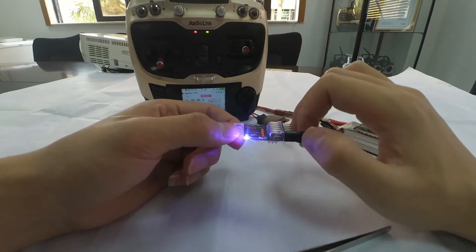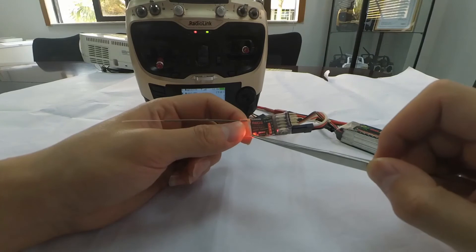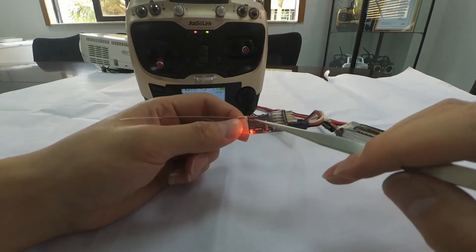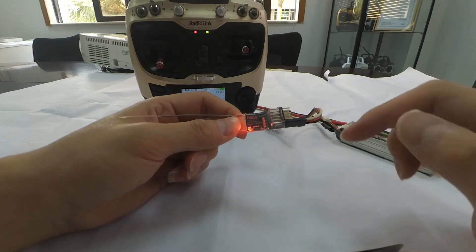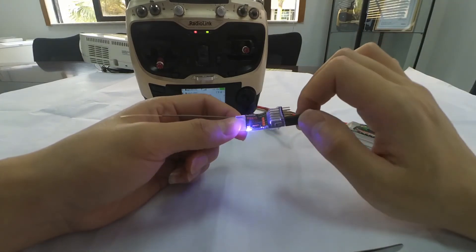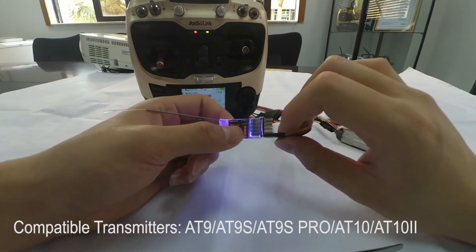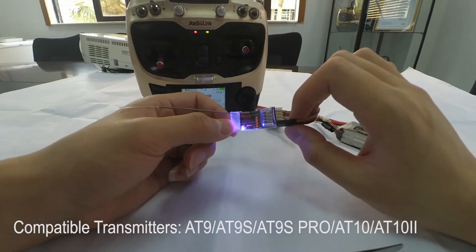Blue stands for PPM S-bus output. We can switch again to take a look. Press quickly two times.